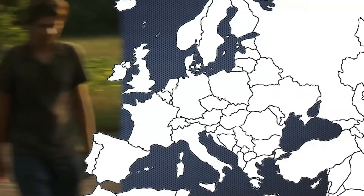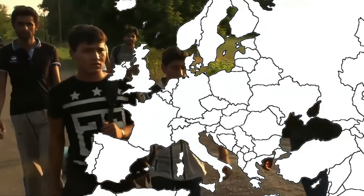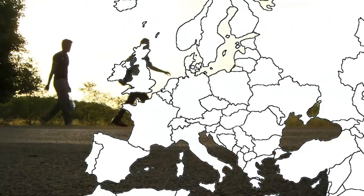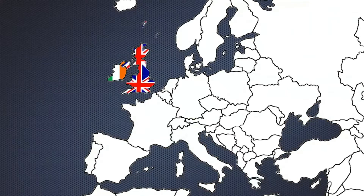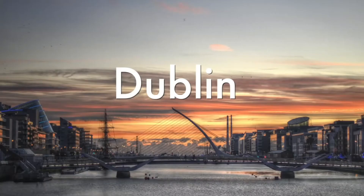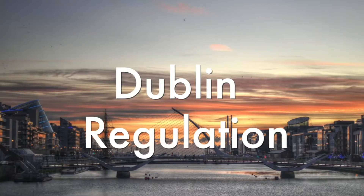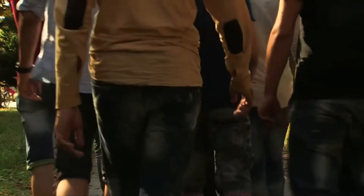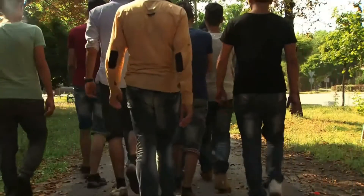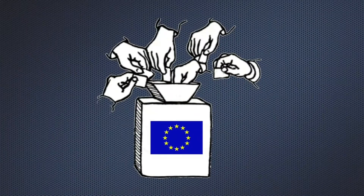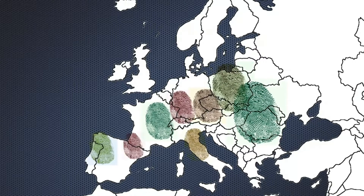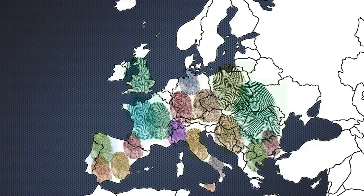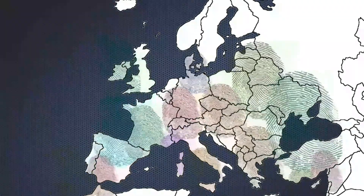Asylum seekers in Europe are governed by a common set of rules that apply to most EU member states and some neighbouring countries, but not the UK and Ireland. The so-called Dublin Regulation is a key part of that system. It was designed to prevent asylum seekers from submitting applications to multiple EU member states, stipulating that claims should be processed by the country that played the biggest part in the applicant's entry to the EU — usually the country where they first arrived.